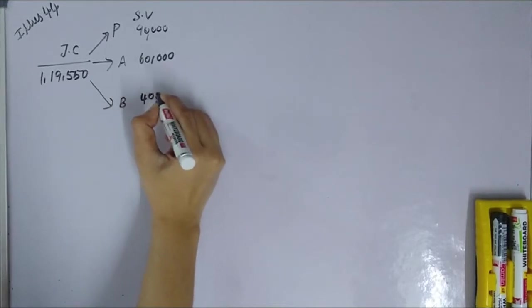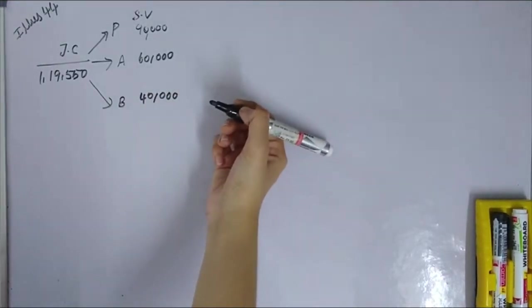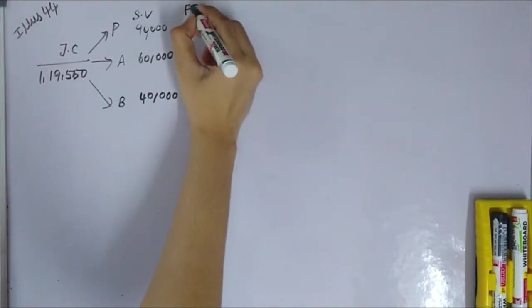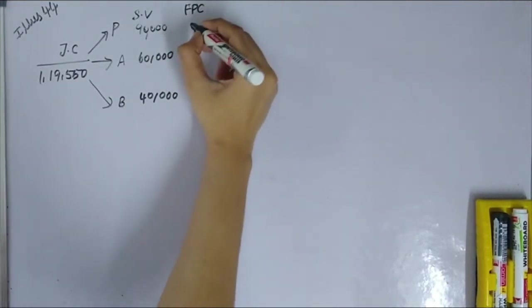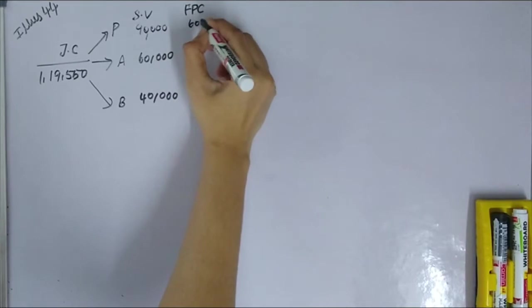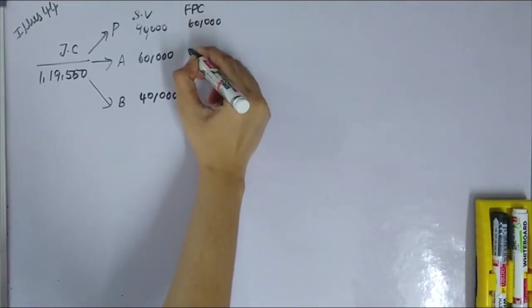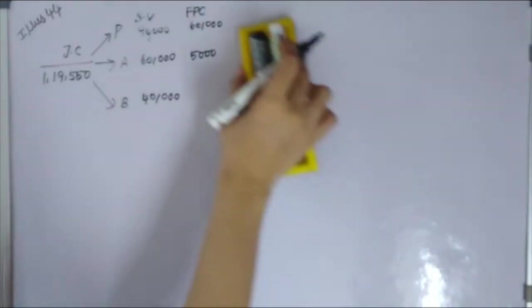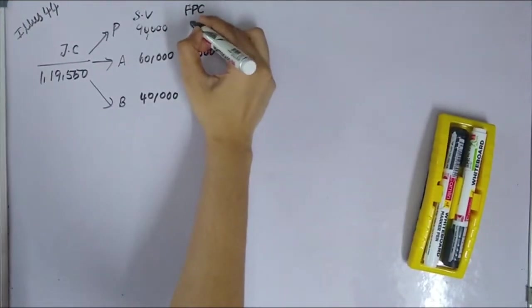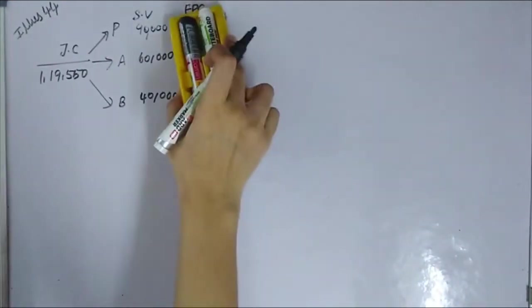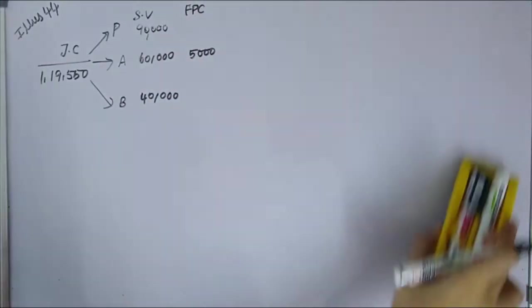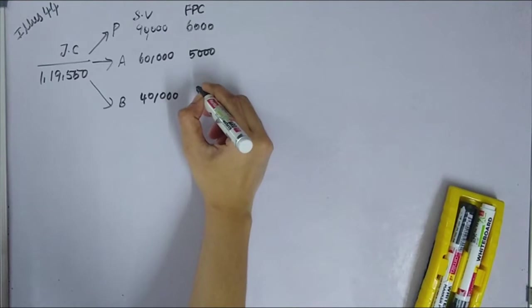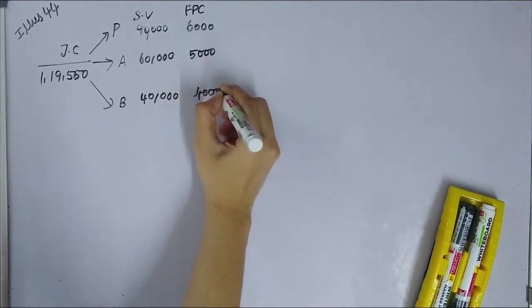The cost incurred after separation: further process cost for main product is Rs 6,000, by-product A is Rs 5,000, by-product B is Rs 4,000.